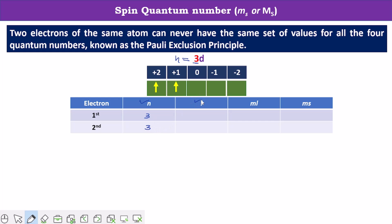Then let's find out the value of l. As mentioned earlier, l equals 0 for s orbital, l equals 1 for p orbital, and l equals 2 for d orbital. Since we are considering a d orbital, the value of l is 2 for both electrons. These values are the same because the orbital is the same.